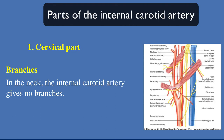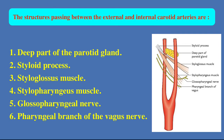Branches of the cervical part in the neck: the internal carotid artery gives no branches. The structures passing between the external and internal carotid arteries are: number one, deep part of the parotid gland; number two, styloid process; number three, styloglossus muscle; number four, stylopharyngeus muscle; number five, glossopharyngeal nerve; number six, pharyngeal branch of the vagus nerve.